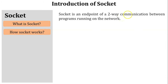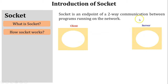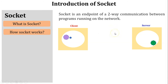As per the definition, programs running on the network means programs running on different machines on the network. For example, there is one client and one server — one program running on the client and another program running on the server. When the client program wants to communicate with the server program, i.e., send a message to the server, a socket is required.